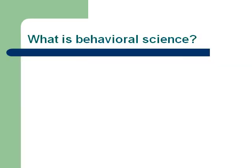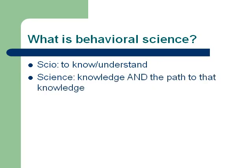Starting off, what is behavioral science? Well, if we break that down, we're going to start thinking about what is science. The root word in Latin for science is 'scio,' which means to know or to understand. So science is a path to knowing or understanding, and it's also the knowledge or understanding generated by taking that path. We have two things when it comes to science: the scientific method and scientific knowledge, with scientific knowledge generated by pursuing and making use of the scientific method.